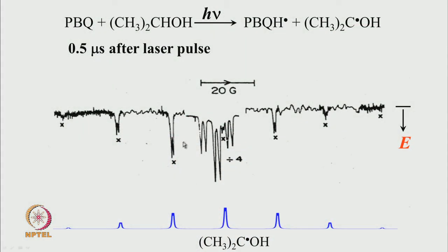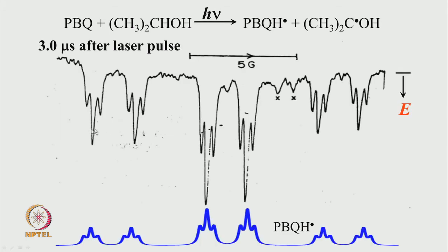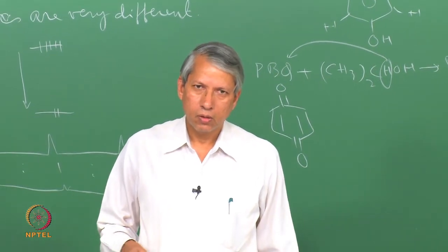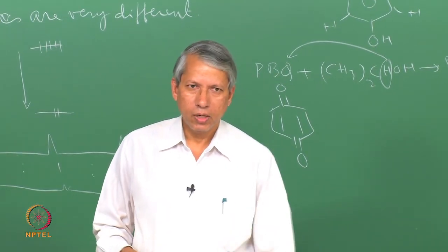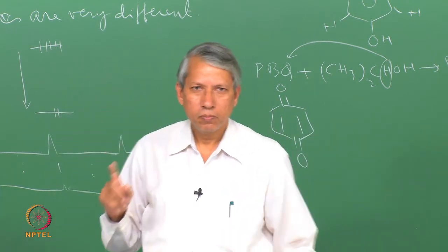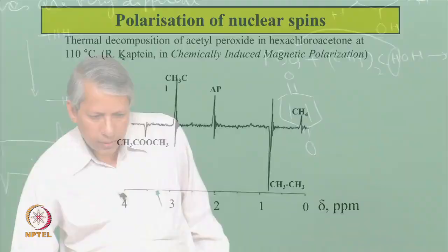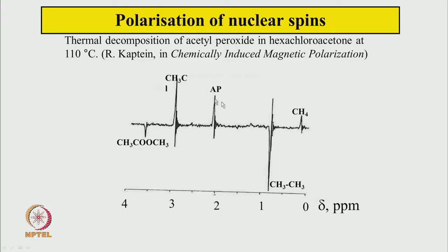Just to show that these lines are indeed coming from the semiquinone radical, this region is expanded and you can see clearly that it matches exactly well with the expected spectrum. The first 1963 observation of Fessenden and Schuller showed the hydrogen atom spectrum appearing in opposite phase. Many people may not have paid attention, but soon in the early 1960s NMR experiments showed lots of such unusual signals.